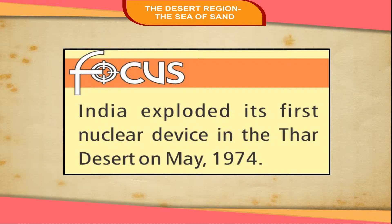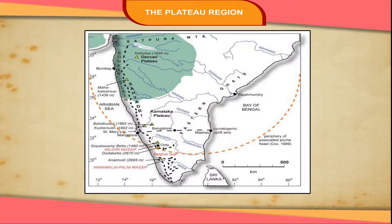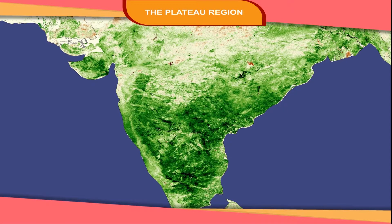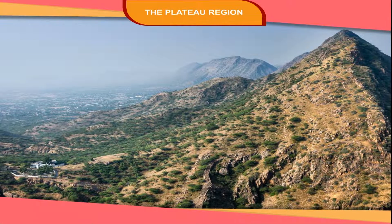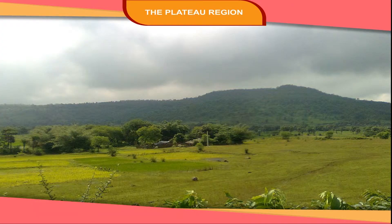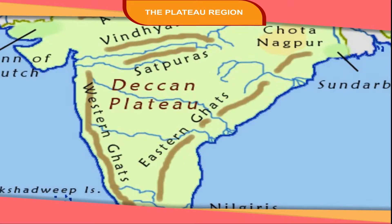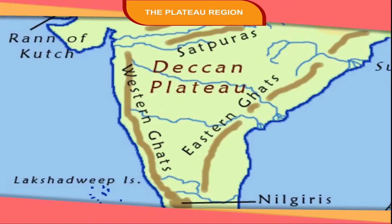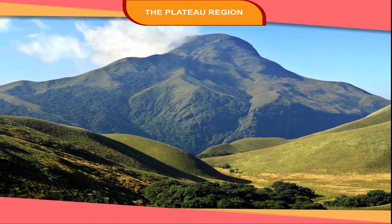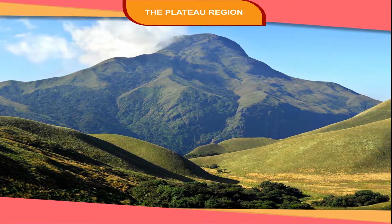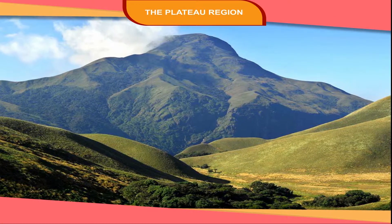India exploded its first nuclear device in the Thar Desert in May 1974. The plateau region lies to the south of the northern plains. It is triangular in shape and covers the largest natural region of India. The plateau region is surrounded by the Aravili hills in the north-west and the Rajmahal hills in the north-east. To the east lies the Eastern Ghats and to the west the Western Ghats. These ghats meet at the Nilgiri hills in the southern part of India. The plateau region is rocky and uneven. The highest peak of this region is Anaimudi at 2,695 metres, which lies in the Cardamom hills.